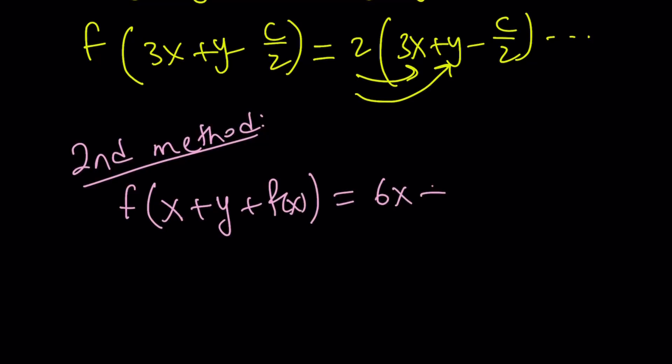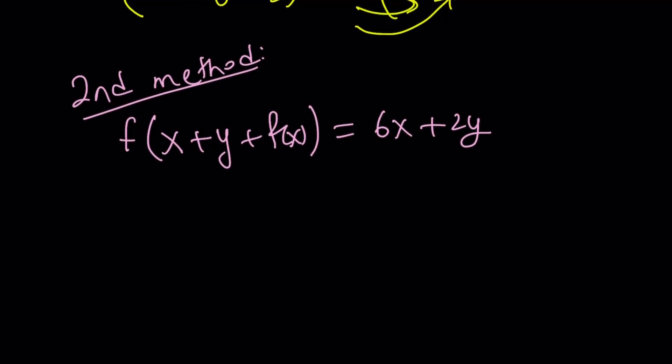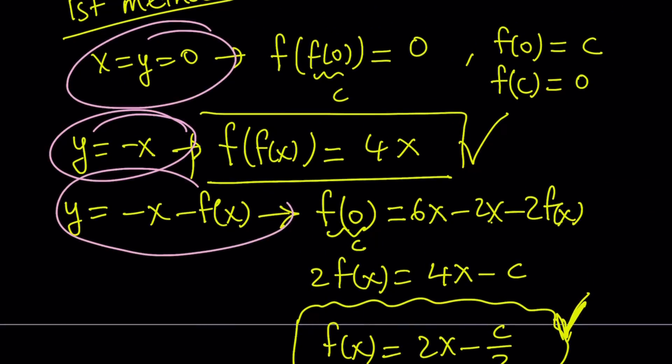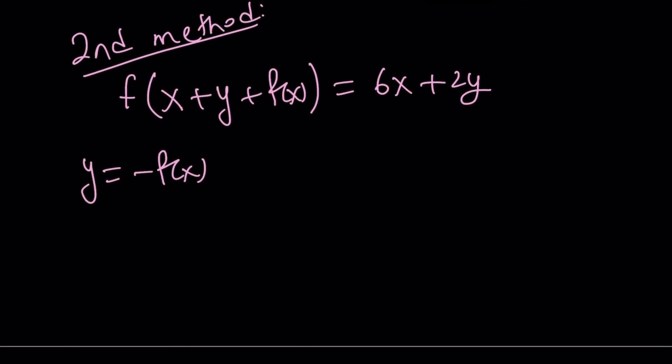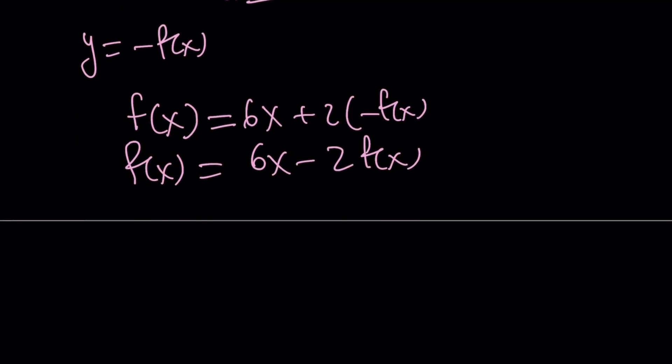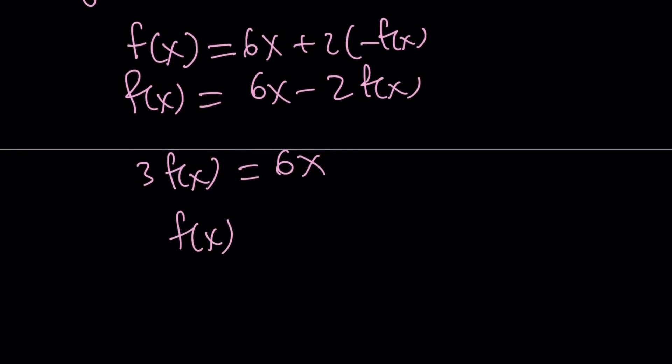Here's my second method: I can replace y with negative f(x). Remember that is something we haven't used before, right? We did x = y = 0, we did y = -x, we did y equals this, but we haven't used this method. So y = -f(x) gives us—these two are gonna cancel out, we get f(x) from here, and on the right hand side we get 2 times negative f(x), that's -2f(x). But notice that I have f(x) on both sides. Well isn't this awesome? These things always get me excited. We get 3 times f(x) if you put these two together: 3f(x) = 6x. If you divide both sides by 3 you're going to get f(x) = 2x.